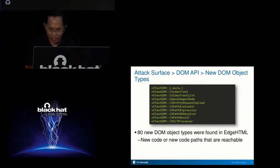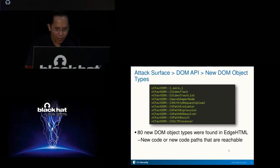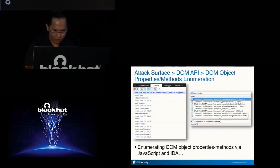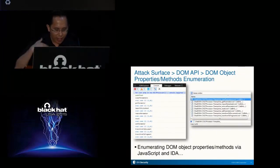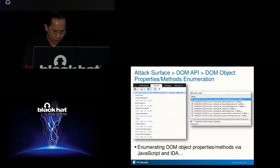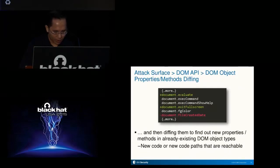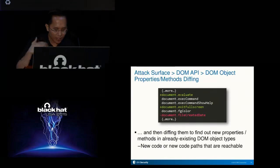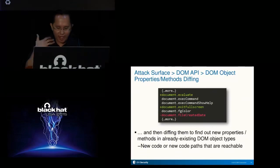The complete list can be found in the white paper. As an example, this listing shows the new DOM object types to support the new XPath API and the new XSLT API in EdgeHTML DOM. The properties and methods of DOM object types can be enumerated using JavaScript's for-in statement, and another way is via querying the IDA names window. Once you have the list of properties and methods, you can also diff them to identify changes in already existing DOM object types. For example, DOM document evaluate is a new method used for evaluating XPath expressions.